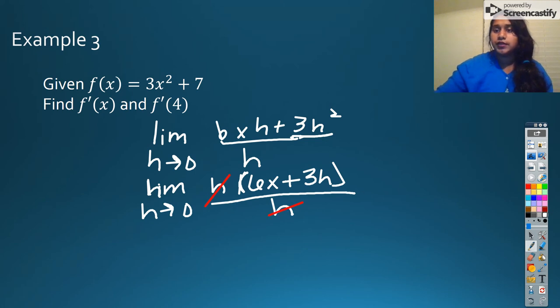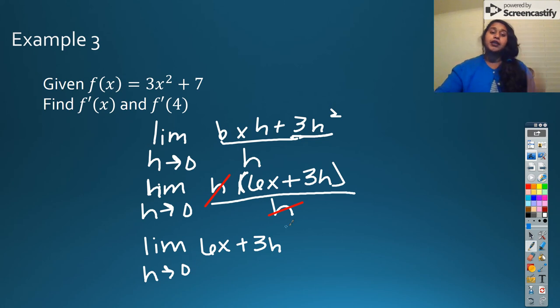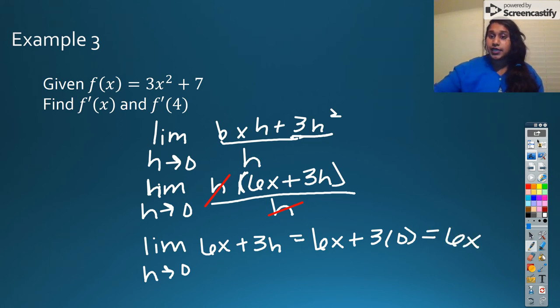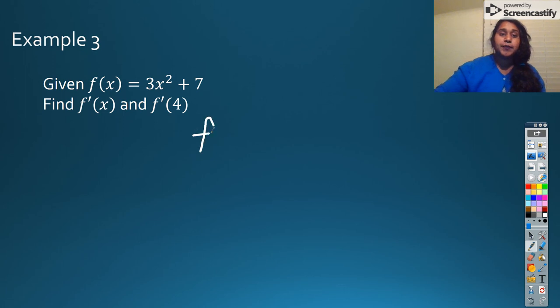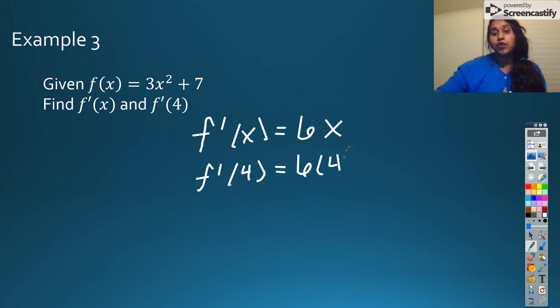And I'm going to be left with my limit as h approaches 0 of 6x plus 3h. And now that I have no denominator, I can go ahead and plug in that 0. That becomes 6x plus 3 times 0. That's going to cross out, which simply leaves me with 6x. So we can wrap up and say f prime of x equals 6x. So therefore, f prime of 4 should equal 6 times 4, so it should equal 24. There's our end answer.